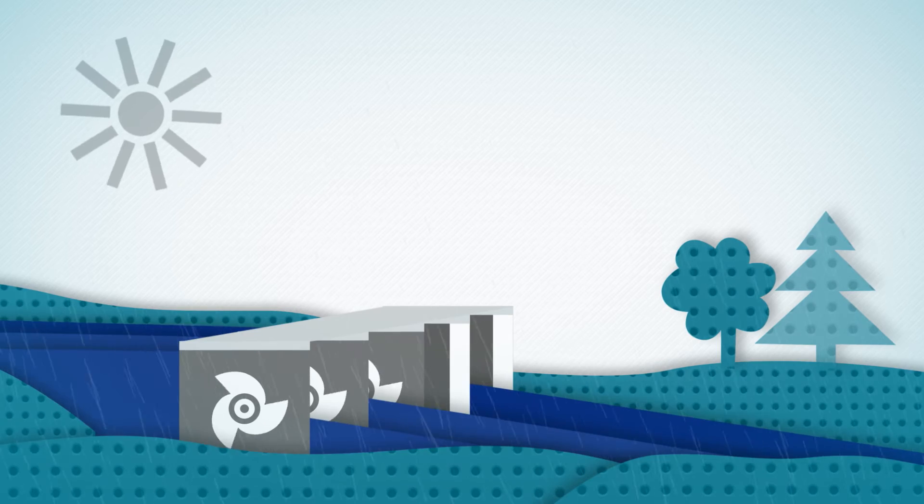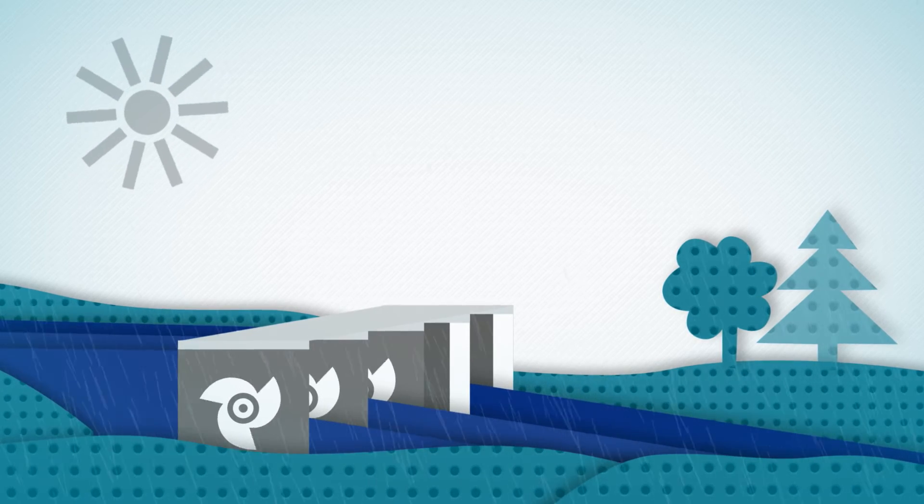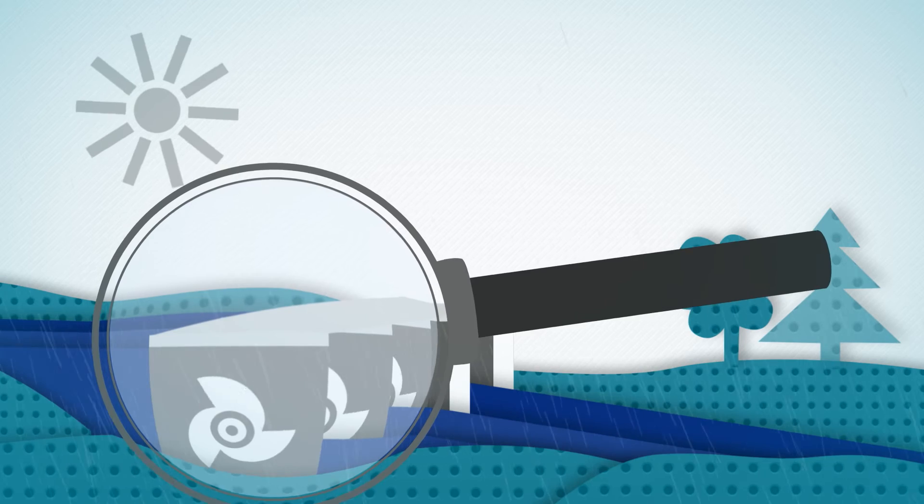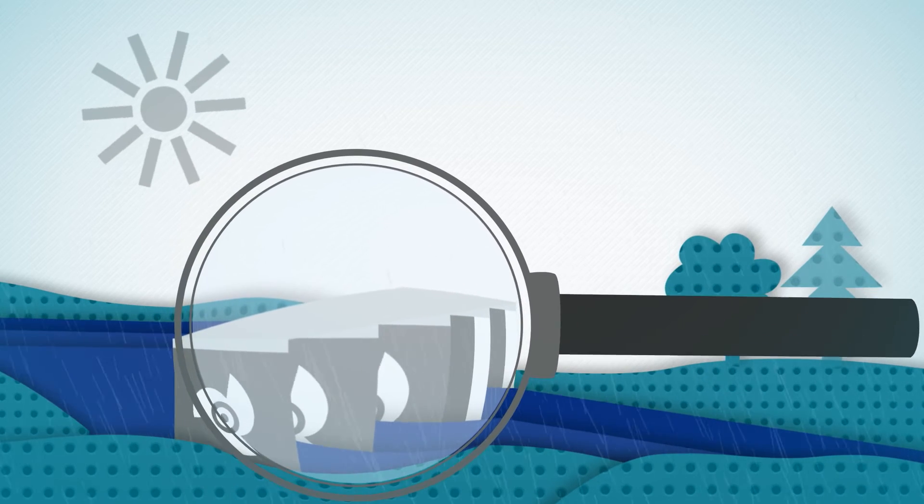This means that run-of-river power plants are not flood control systems. They can, however, minimize or prevent flooding in the area around their dikes.